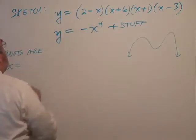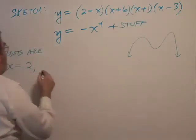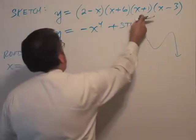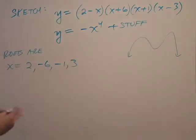If I set this equal to 0, I'm going to get positive 2. Set that equal to 0, I get negative 6. And then we get negative 1 and positive 3. So 4 roots for a quartic function, 4th degree function.